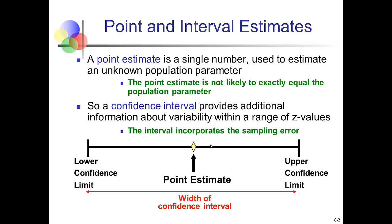What we've been doing so far is primarily calculating point estimates. A point estimate is a single number that we use to describe or estimate the population parameter. For example, if we were to calculate a sample mean, that would be a point estimate, and we'd be using that to describe the population mean.